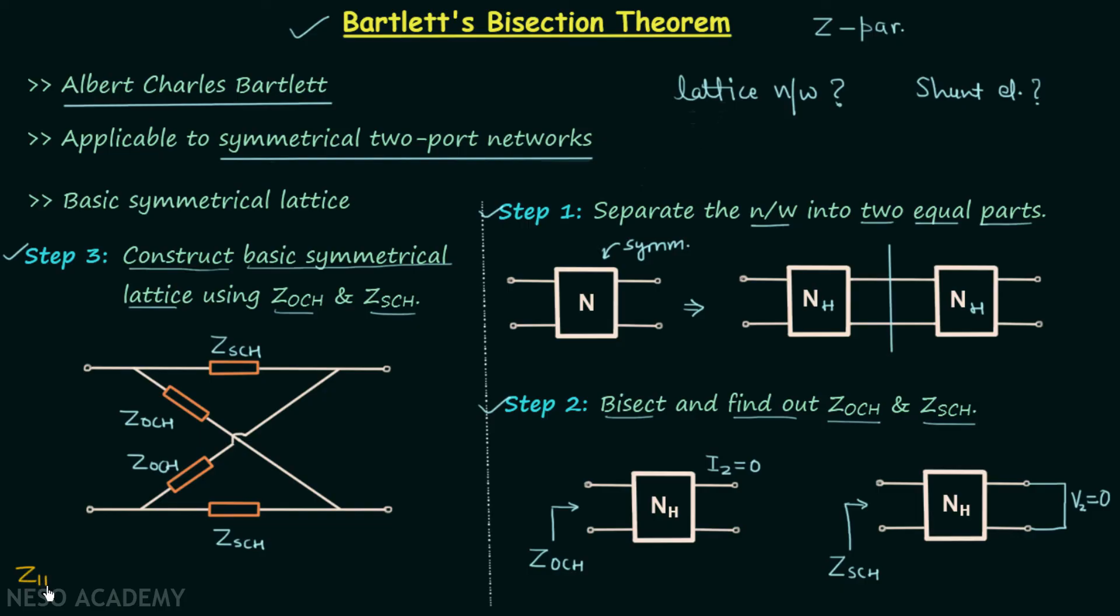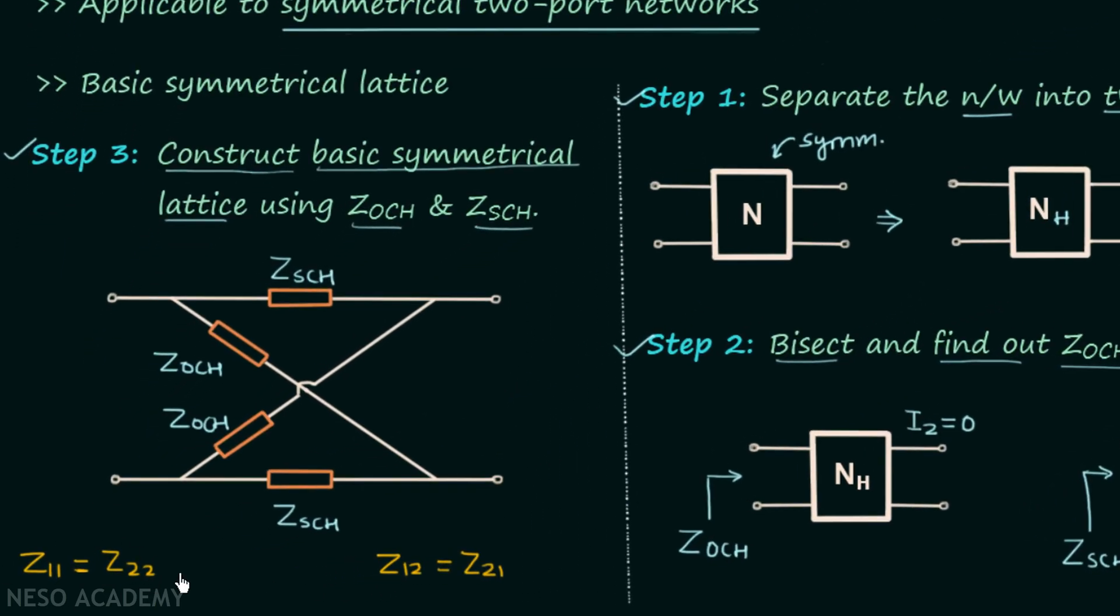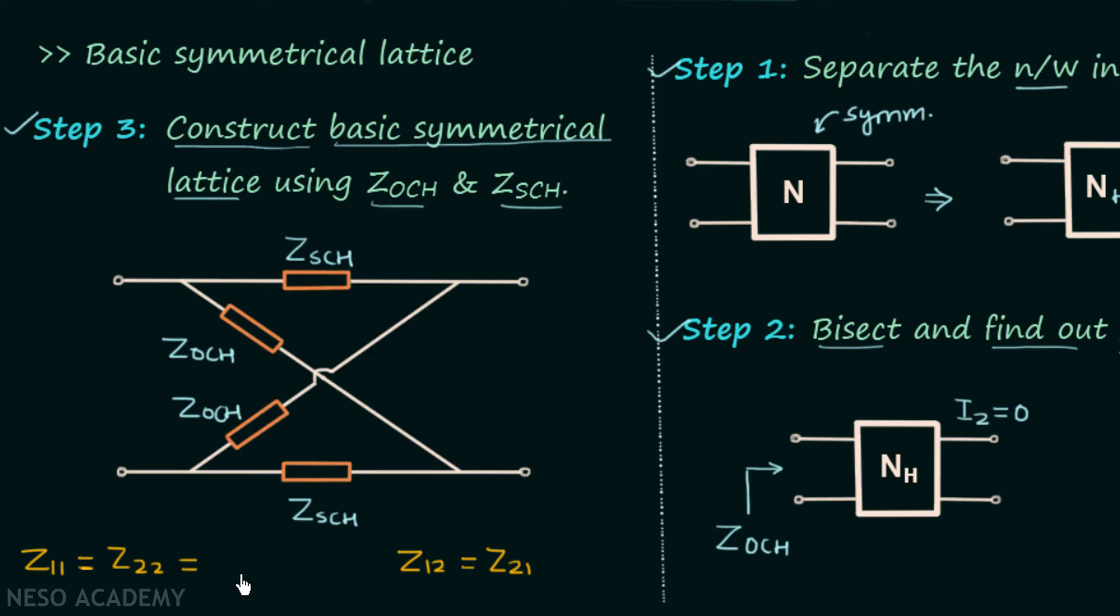Parameter Z11 will be equal to parameter Z22, and parameter Z12 will be equal to parameter Z21. Z11 and Z22 equal Z OCH plus Z SCH divided by two, and Z12 and Z21 equal Z OCH minus Z SCH divided by two.